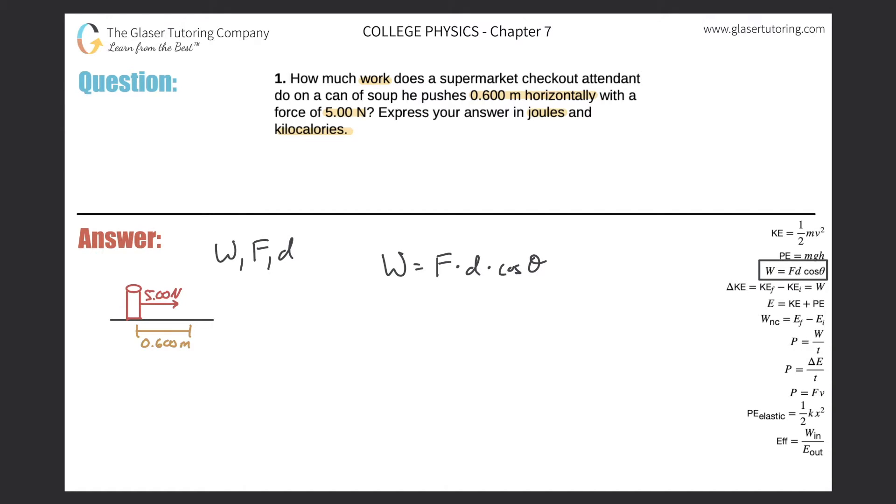So since the direction of motion in this problem is horizontal, meaning the can is moving horizontally across this shelf, right? And the force also is applied in the same direction. That means the angle between those two vectors, the distance vector here and the force vector would be 0, right?